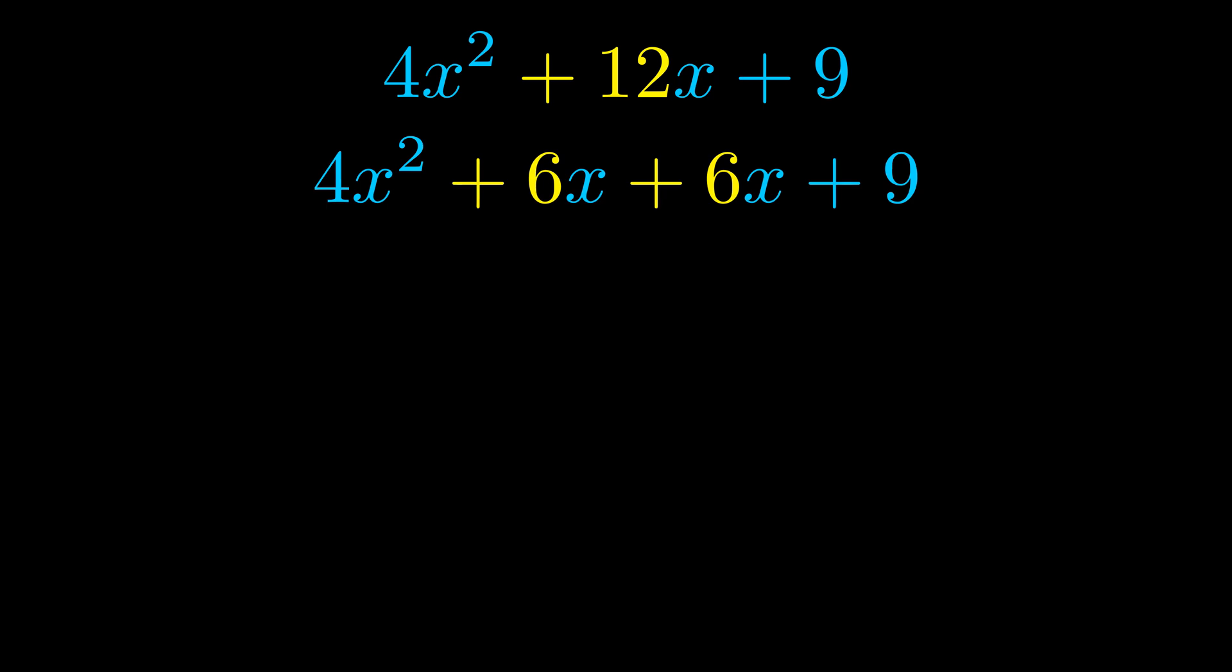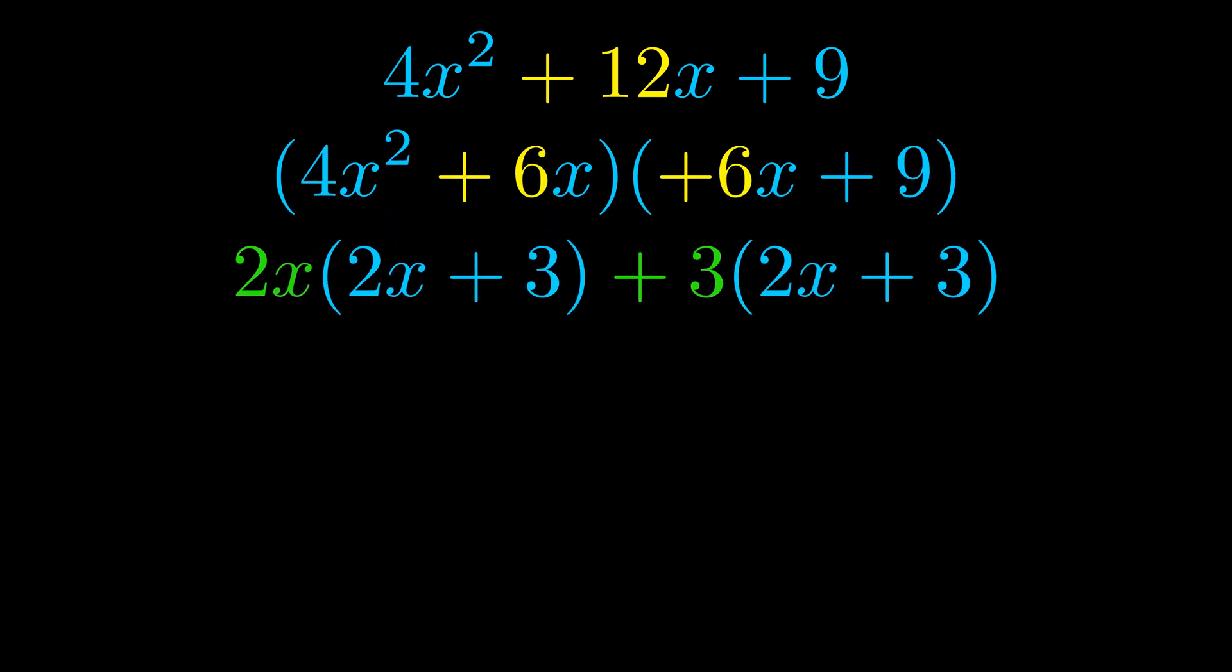Once we've done this we go ahead and we put parentheses around the first term and the last term. And we do that so that we can take the greatest common factor out of both terms. We can see the greatest common factor is now outside in green.